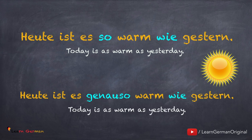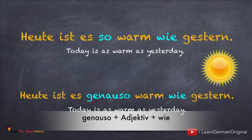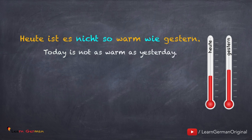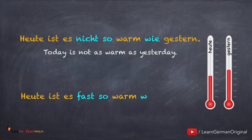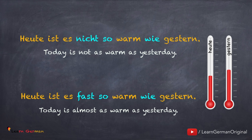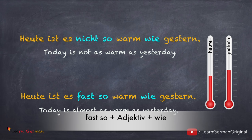The next example is similar. In this case also, we use the positive form of the adjective but along with genauso and wie. The next one is similar. Here also you would use the positive form of the adjective along with fast so and wie.